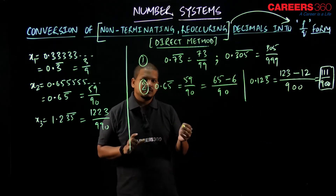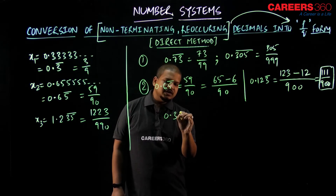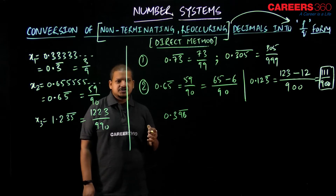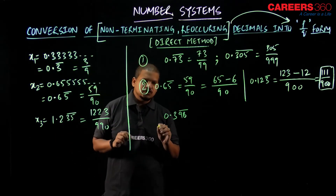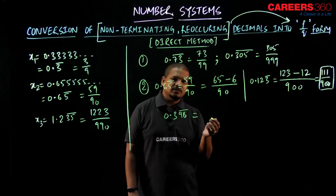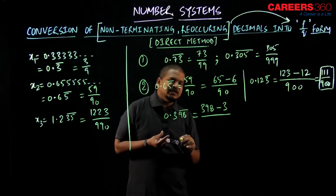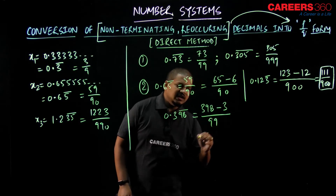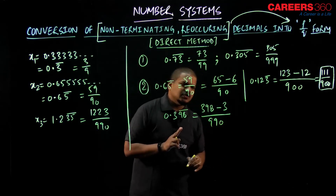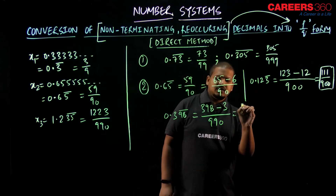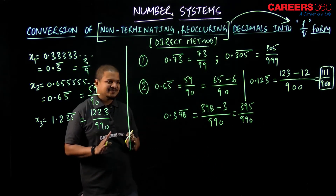Let's try one more example: 0.398̄. Just pause the video and try to calculate. The answer is: write 398, subtract the non-recurring part 3, giving 395 in the numerator. Two digits are recurring, so write 9 twice; one digit is non-recurring, so write one zero. Therefore 0.398̄ = 395/990.